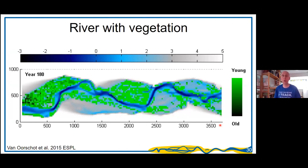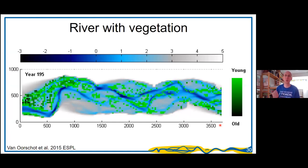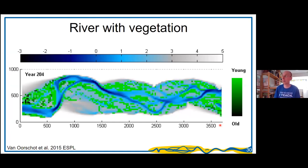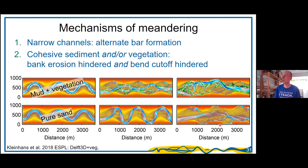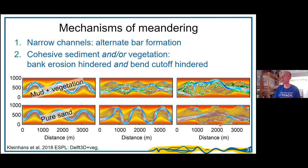I tested this for a whole series of scenarios. The top scenario shows maps through time over 300 years, with vegetation and mud — it maintains meandering. The bottom scenario with pure sand and no cohesion ends up with a braided system. So the inner bank stability mechanism works.